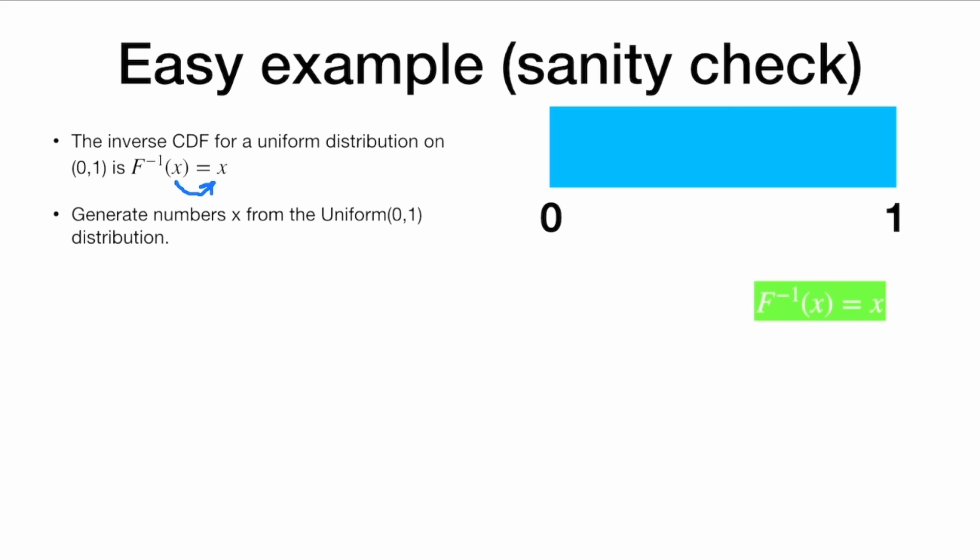So let's do an easy example of this as a sanity check. The inverse CDF for a uniform distribution itself on the interval 0 to 1 is F inverse of X is equal to X. Okay, so it's the identity function. We put in a number, and it spits out the same number. So let's generate numbers from a uniform 0, 1 distribution, which looks like this.